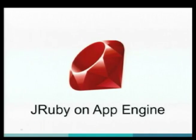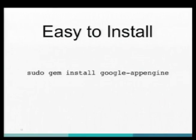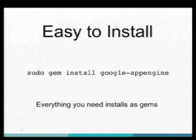Let's talk about JRuby on App Engine. First of all, it's very easy to install — everything installs as gems. Even though it's running on JRuby, you don't have to install JRuby separately. You just need Java running on your machine and a recent version of RubyGems. You install one gem, it brings down the other gems you need, the JRuby runtime we've packaged, and the development environment and tools to get going.